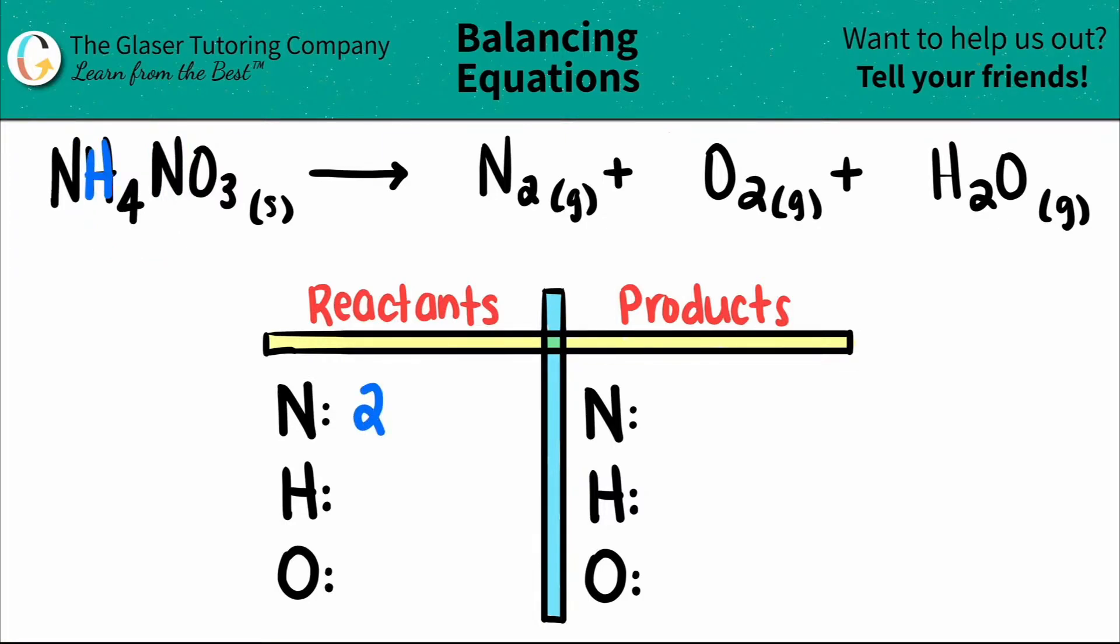For my hydrogens, I only see that I have four hydrogens on the left side or the reactant side. So I'm going to put a four here. And then for the oxygens, I see that I have three oxygens, so I'm going to put a three here.